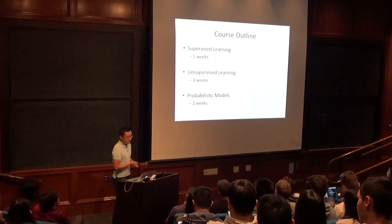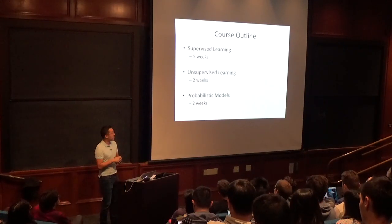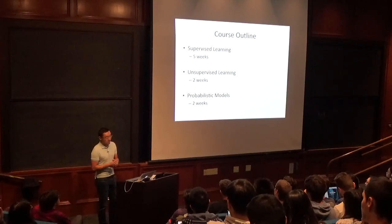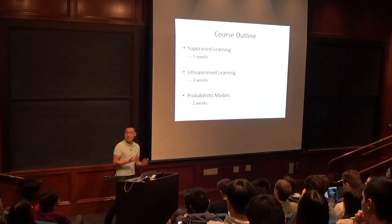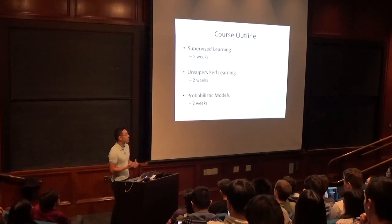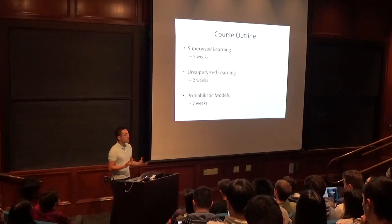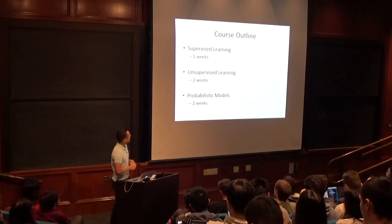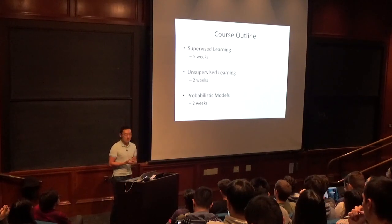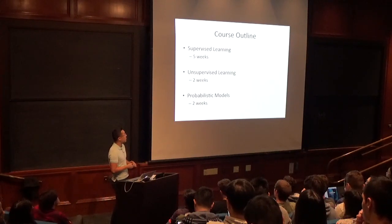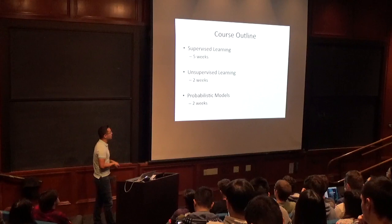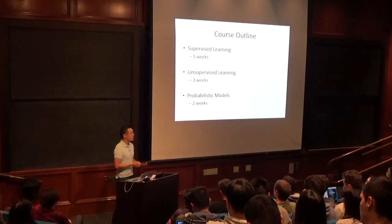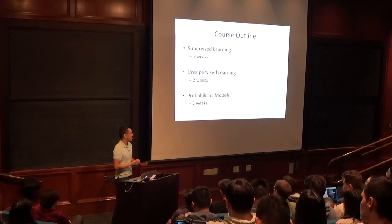Here's the course outline. We'll spend five weeks on supervised learning — the bulk of practical content, and the most popular paradigm used in industry today and across the sciences. We'll spend about two weeks on unsupervised learning, popular in scientific domains where you don't have supervised labels. We'll conclude with two weeks on probabilistic modeling — probabilities, generative models, and reasoning about uncertainty.